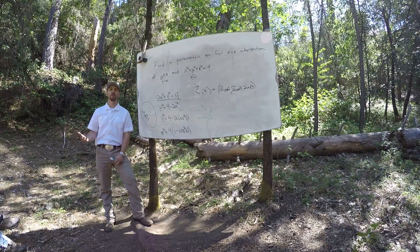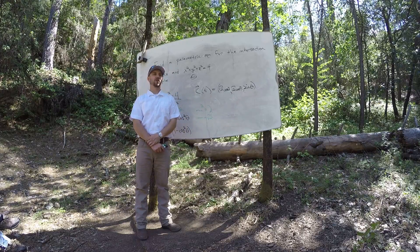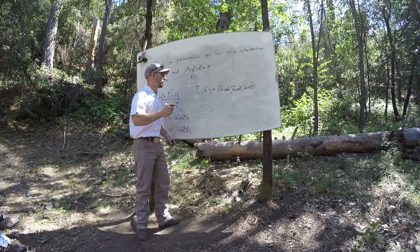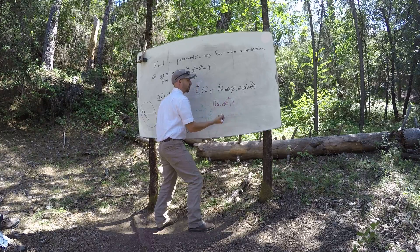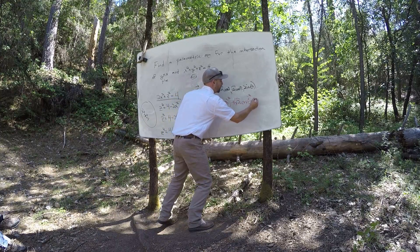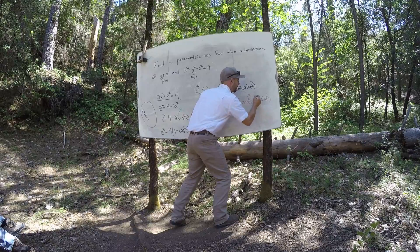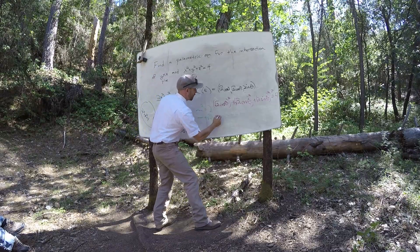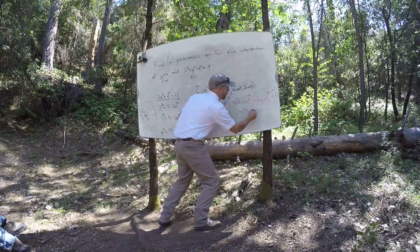So now I should check — does this thing actually work? Is Y equal to X in this parameterization? Yeah. Is x squared plus y squared plus z squared equal to 4? I would hope so. So let me check. I need x squared — that's root 2 cosine theta, squared — plus the same thing — plus 2 sine theta, all squared.